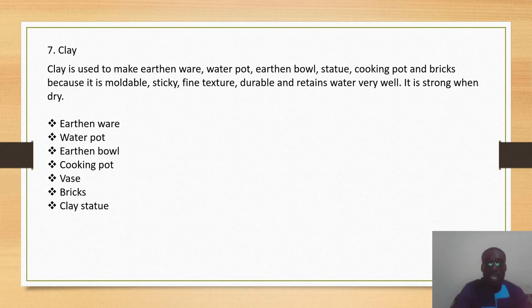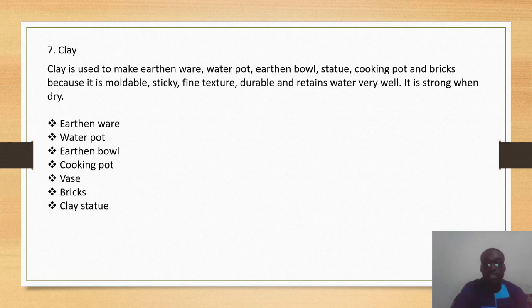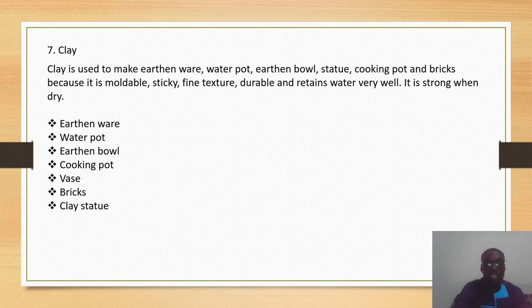Clay is used to make earthenware, water pots, earthen bowls, statues, cooking pots, and bricks, because clay can be molded into different shapes and sizes. It is sticky, has a fine texture, has the ability to retain water, and is strong when dry. So we can make earthenware, water pots, vases, bricks, and clay statues using clay.